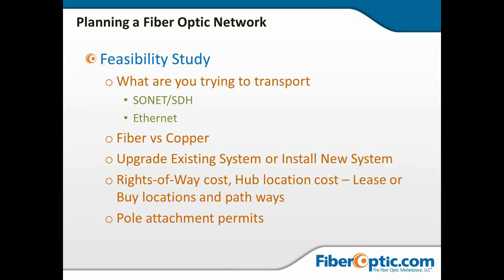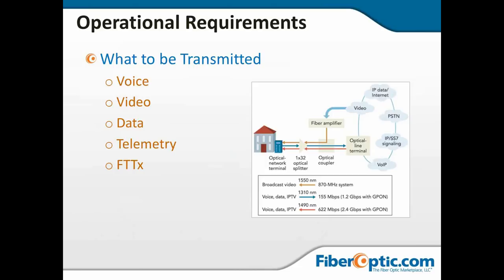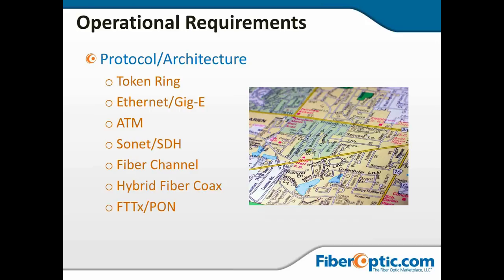For operational requirements, we first decide what we're carrying: voice, video, data, telemetry, fiber to the home, fiber to the curb, or some combination. As shown in the drawing, fiber to the home is a combination of video, voice, and data. What we're trying to carry is the first key in understanding our physical plant needs. Then we need to look at protocol or architecture — token ring, Ethernet or GigE, asynchronous transfer mode, Sonet or SDH, fiber channel, hybrid fiber coax, or PONs — passive optical networks.